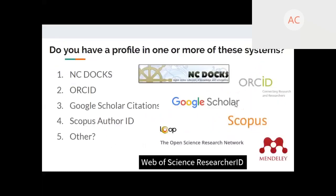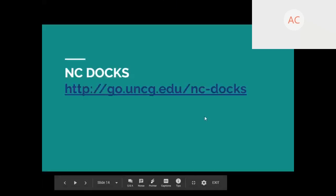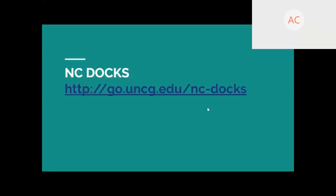For those of you here today, if you have a profile in one or more of these systems, I'd love to know in the chat — or if you're interested in any of them, feel free to share. Karen says she has one in Google Scholar and is interested in ORCID. We'll talk about NC Docs, ORCID, Google Scholar, and Scopus. Let's get into it.